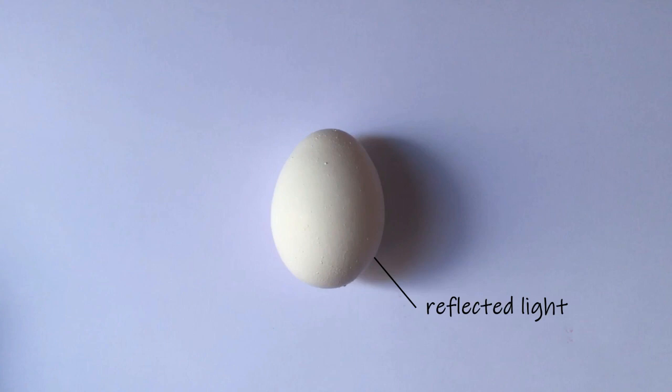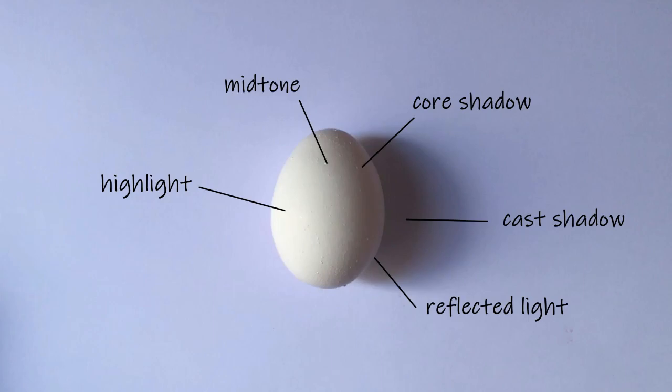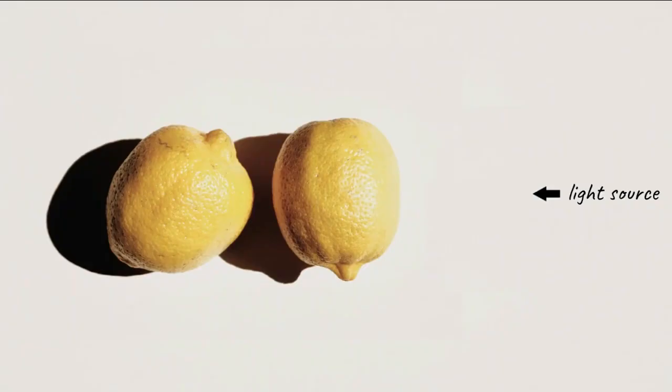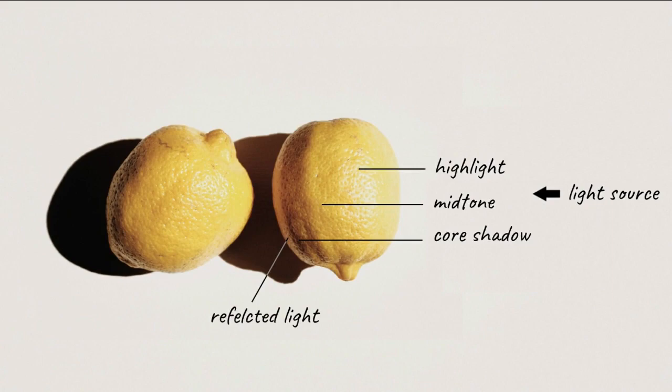Once you're familiar with all these different areas of light and shadow, you'll start to see them everywhere. Let's take these lemons with the light coming in from the right. We have a highlight, a mid-tone, the core shadow. And where the darkest part of the shadow should be, we see the reflected light. And the cast shadows on the table.